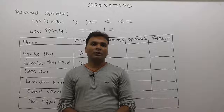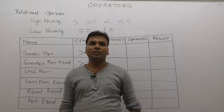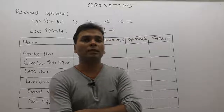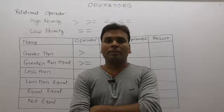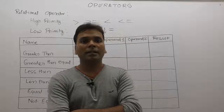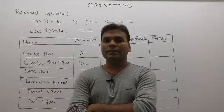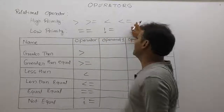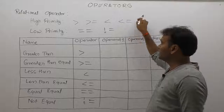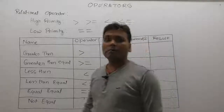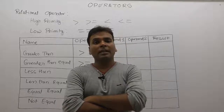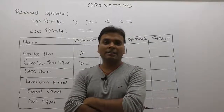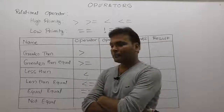After discussing arithmetic operators, we move onwards to relational operators in C language. There are six types of relational operators provided by C. All relational operators come under the binary operators category because they require exactly two operands. In C language, out of the total six relational operators available, four have the highest priority and the remaining two have the least priority.